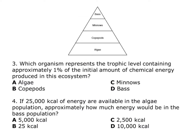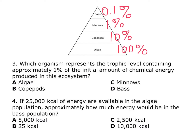This concept works exactly the same way with energy pyramids. Looking at question number three: which organism represents the trophic level containing approximately 1% of the initial amount of chemical energy produced in this ecosystem? Algae are the aquatic producers — they produced 100% of that. Then 10%, 1%, and 0.1%. They wanted to know which one would get approximately 1%, and so that is the minnow population.